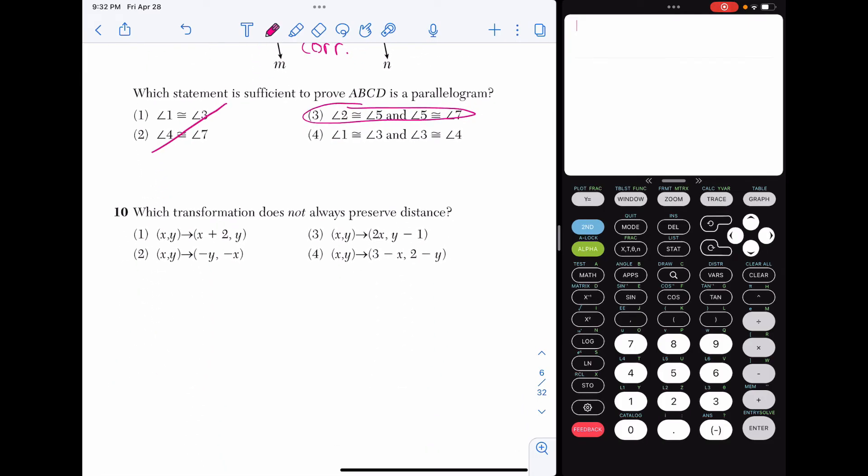Number 10, which transformation does not always preserve distance, that's a dilation. That's whenever you are multiplying the coordinates by something. And in this case, in choice three, I can see the X value was multiplied by two.